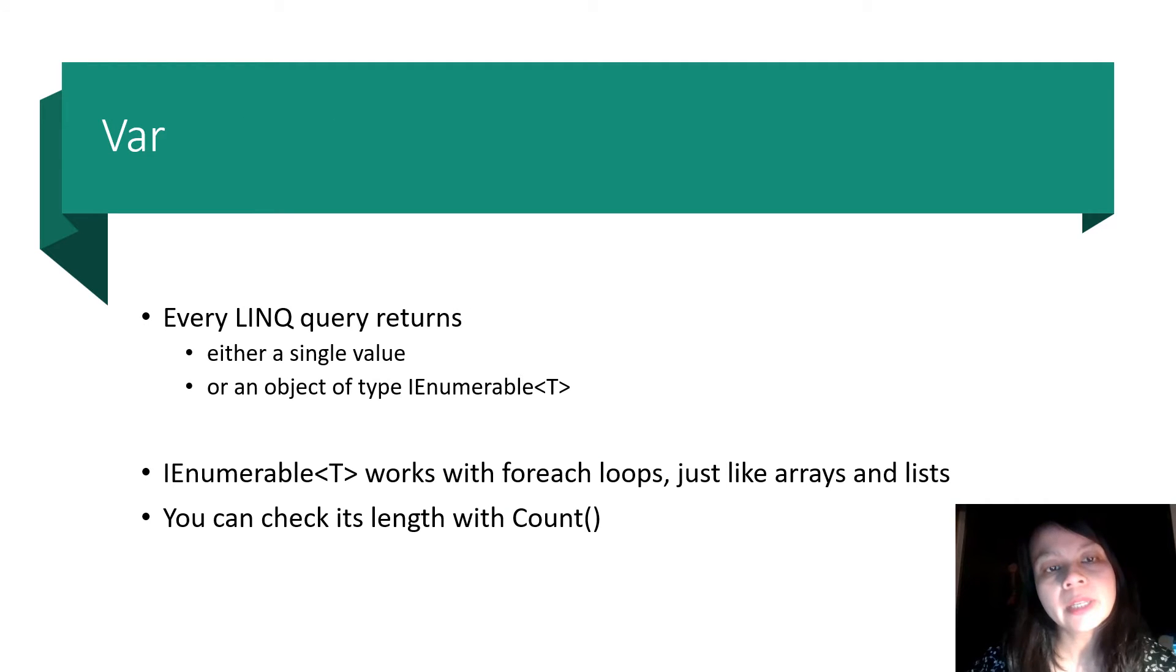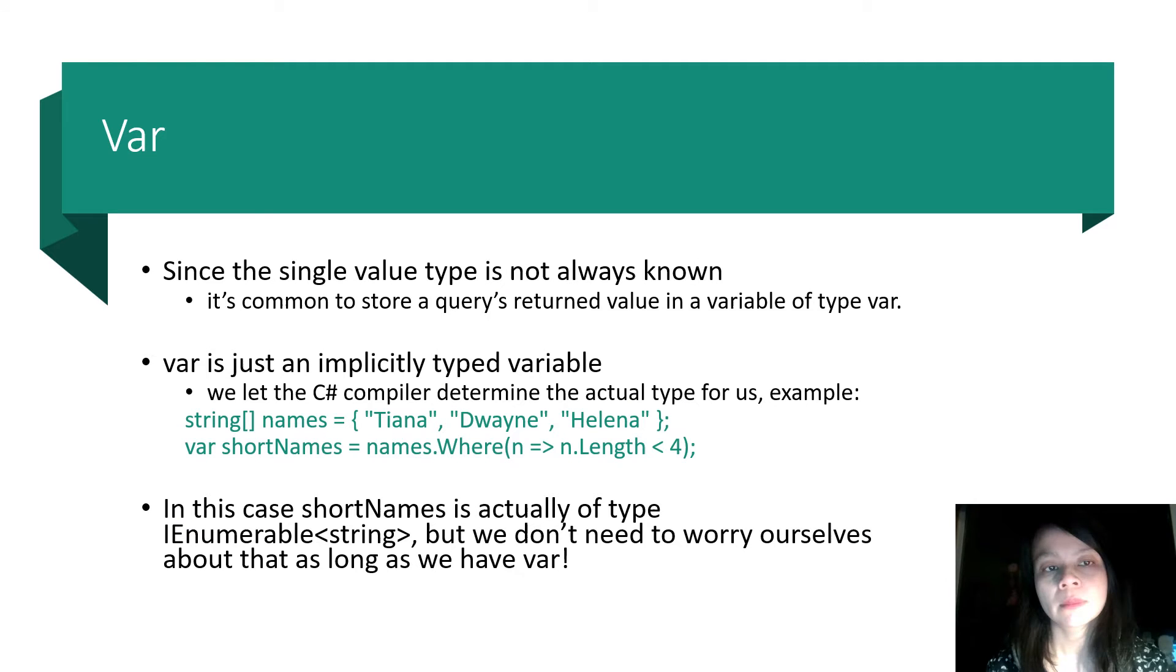So every LINQ query returns either a single value or an object of type IEnumerable<T>. IEnumerable<T> works with foreach loops, just like arrays and list. And you can check its length with count. Since the single value type is not always known, it's common to store a query's return value in a variable of type var.